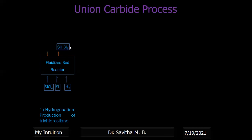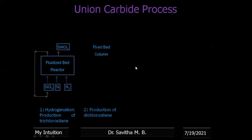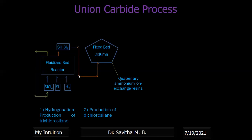The trichlorosilane is then passed into a chamber with quaternary ammonium ion exchange resin, where another chloride is replaced by hydrogen, forming dichlorosilane. This is the second step — production of dichlorosilane. Some unreacted tetrachlorosilane produced here is recycled back to the first chamber to be converted into trichlorosilane.